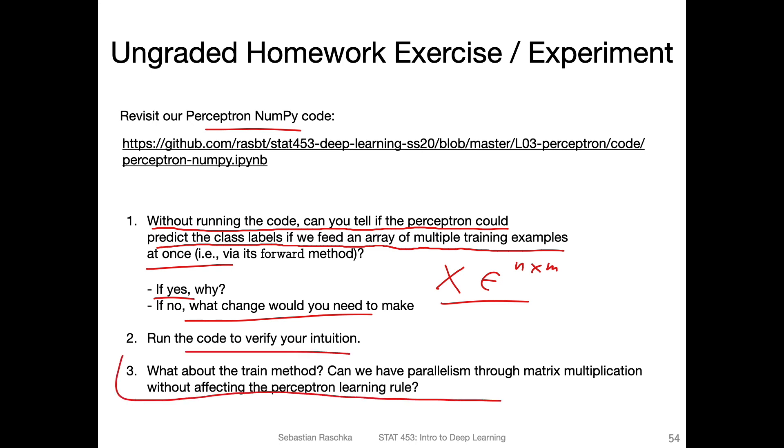How about the train method? Can we also have some parallelism through matrix modifications in the train method having multiple training examples? Does it make sense without fundamentally changing the perceptron learning rule? It's also another thing to think about.